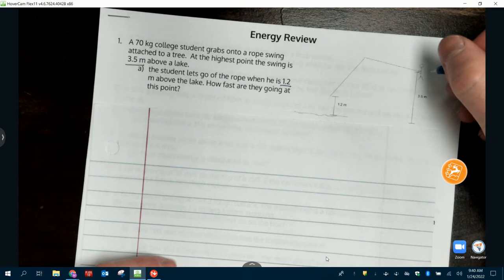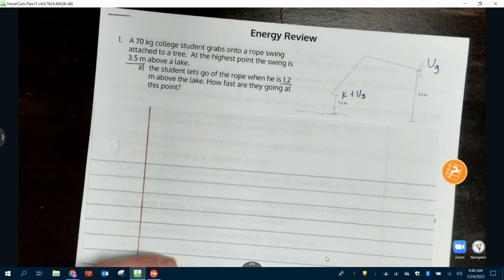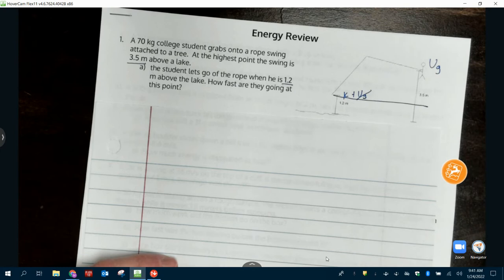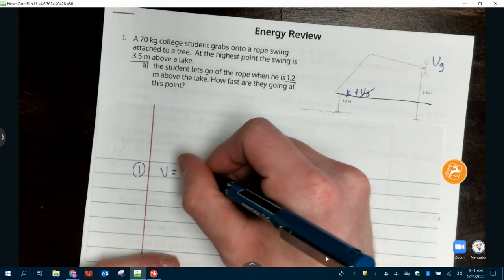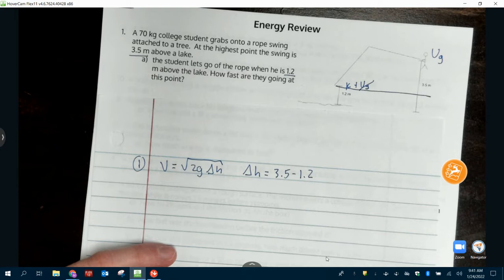So what type of energy do we start with up here? Potential. And down here we have what? Are we off the ground? Yes. So there is also potential. But when two things have potential what we can do instead is cancel this potential out and use the change in height. So our shortcut here is V equals the square root of 2g delta H where delta H is 3.5 minus 1.2.